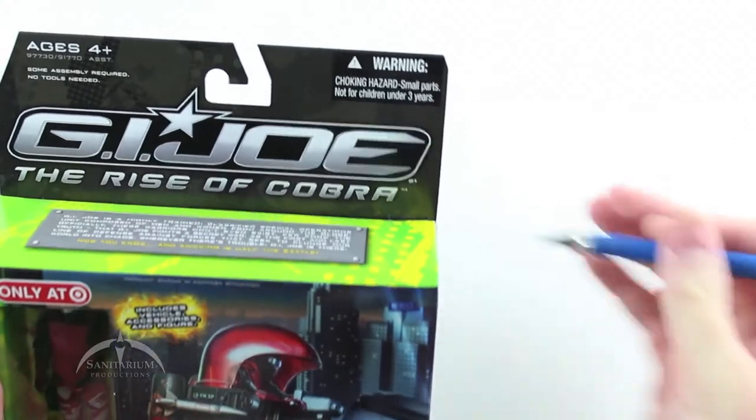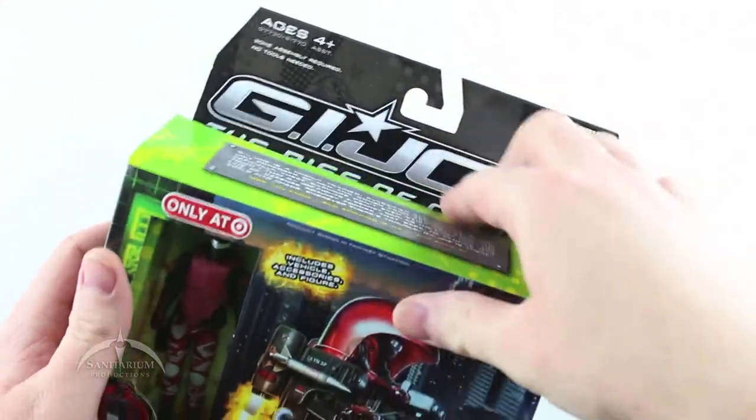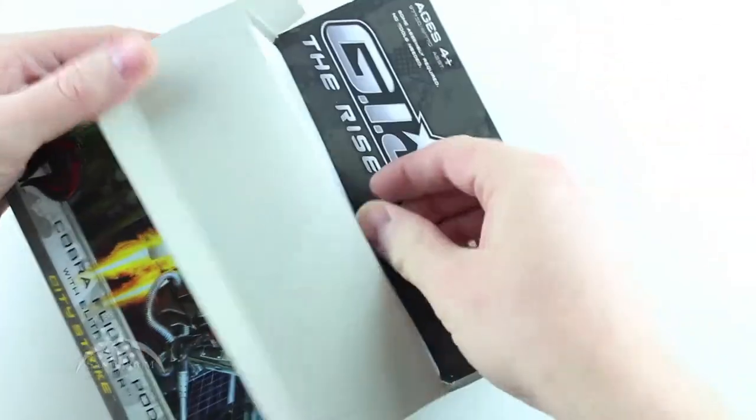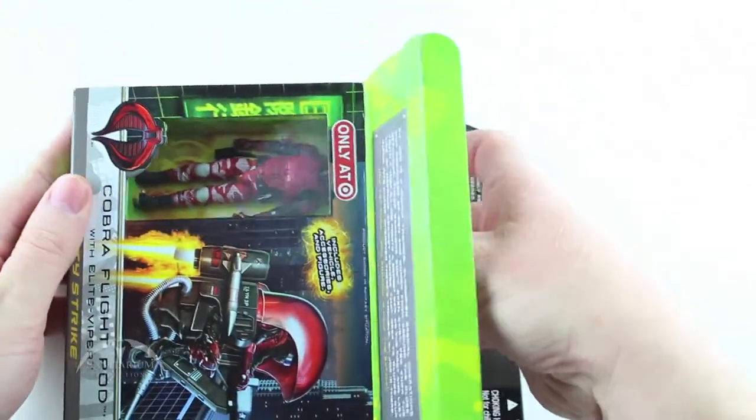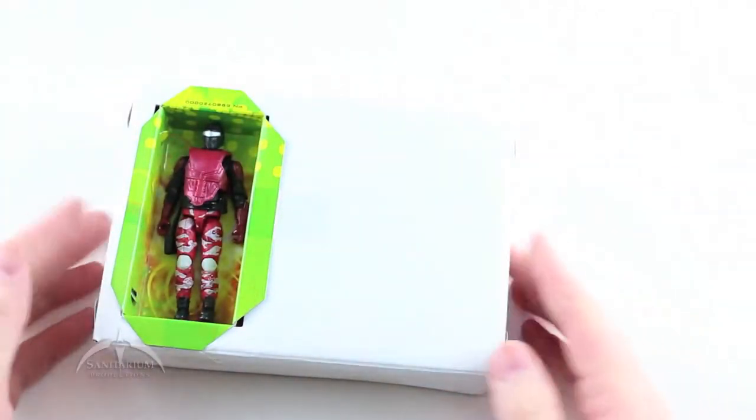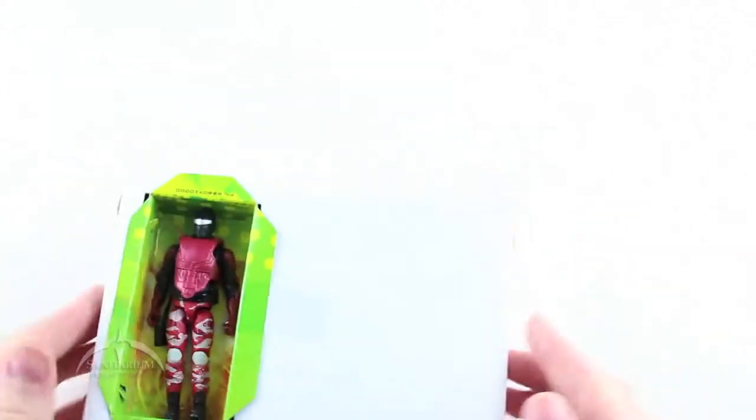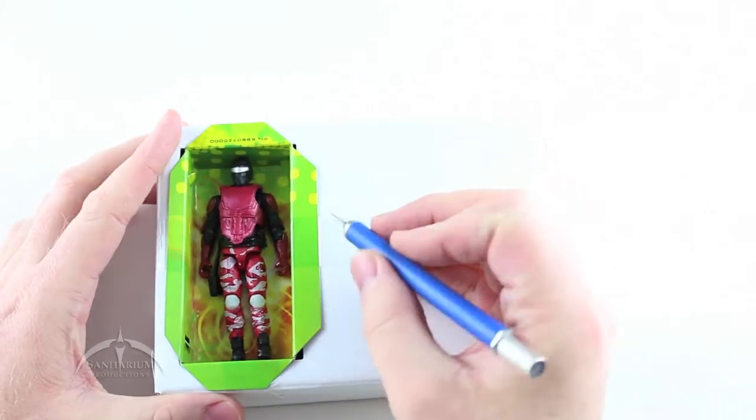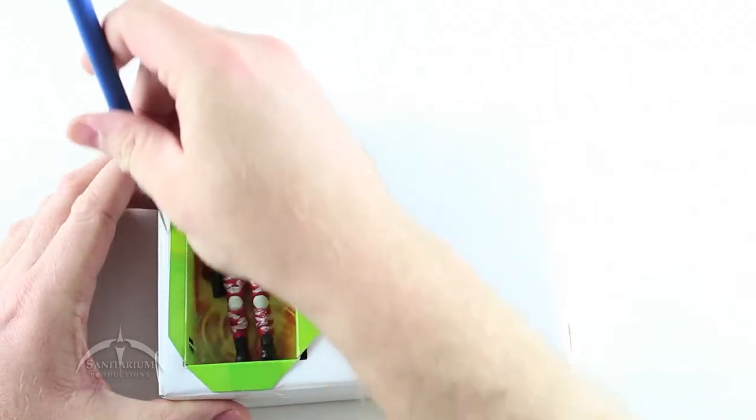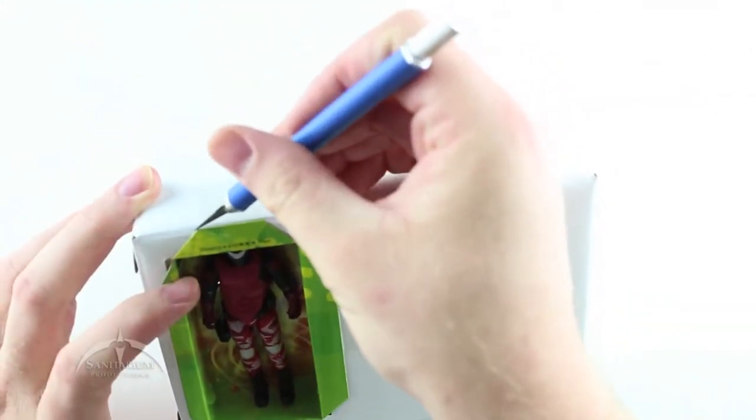Let's go ahead and open this thing up and see what's inside. There's a piece of tape here at the top, nothing at the bottom, nothing on the side, another piece at the top here. This actually opens from the top as opposed to some of the rest of them that open from the sides.